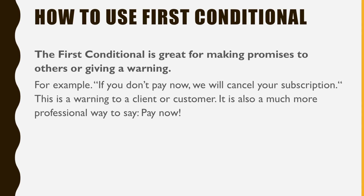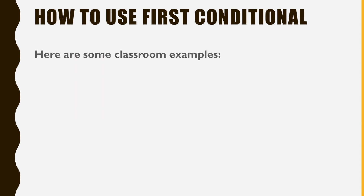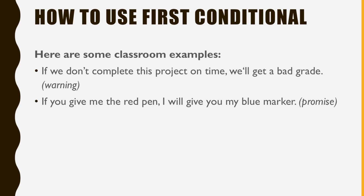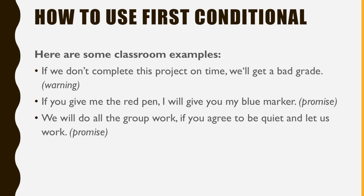The first conditional is great for making promises or giving warnings. For example, 'if you don't pay now, we will cancel your subscription' is a warning to a client or customer, and it has a much more professional sound to it. Here are some classroom examples: if we don't complete this project on time, we will get a bad grade. If you give me the red pen, I will give you my blue marker. We will do all the group work if you agree to be quiet and let us work — that's a promise.